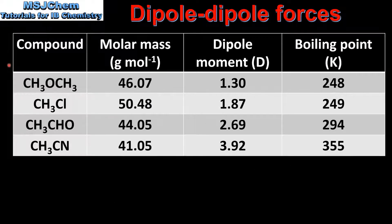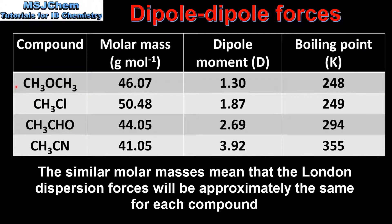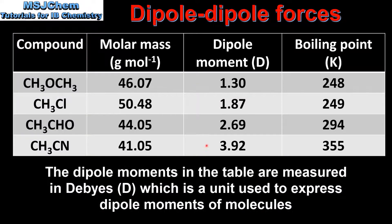In this table we have four polar molecules, their molar masses together with their dipole moments and their boiling points. These four compounds have been chosen as they have similar molar masses, so by looking at their dipole moments we can see the effect of the increasing dipole moment on the boiling point. From this table we can see that as the dipole moment of the molecule increases, so does the strength of the dipole-dipole forces, resulting in an increased boiling point.